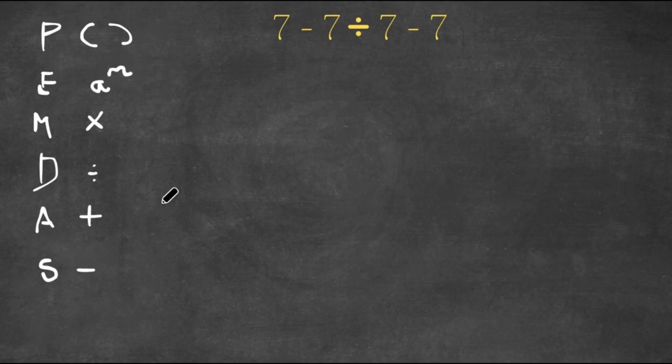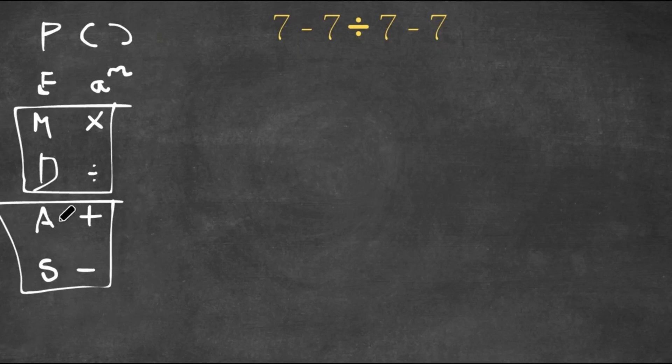This is the order which you want to solve a mathematical problem. You first start with whatever is in the parentheses, then exponents, then multiplication, then division, then addition, then subtraction. However, multiplication and division, as well as addition and subtraction, depend on the order. So it's multiplication and division, and then addition and subtraction, both of these are the same depending on order.